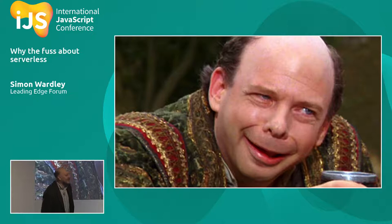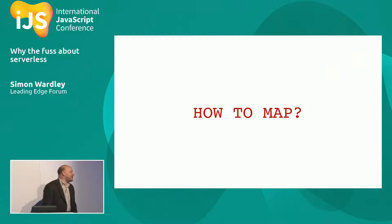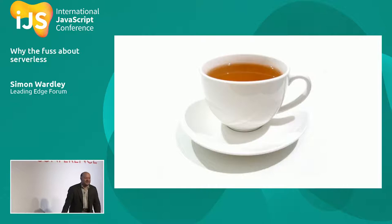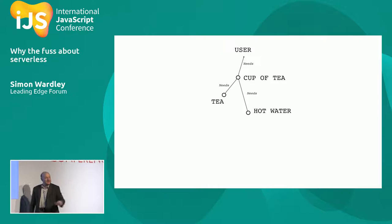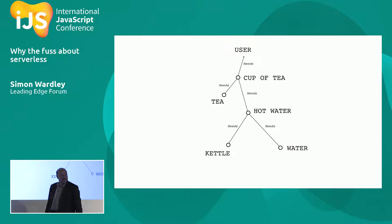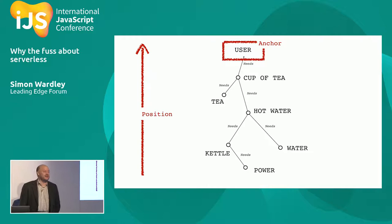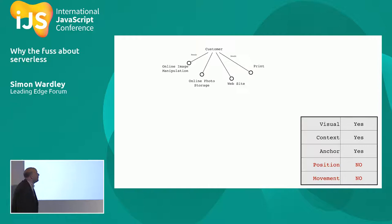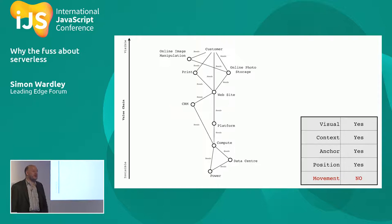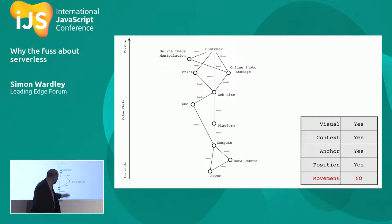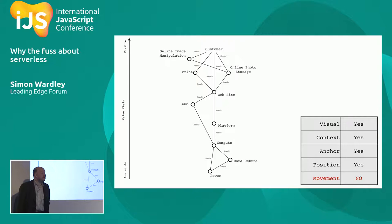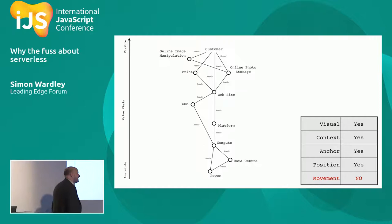How to map — that was my problem in 2005. Being British and totally confused, I sat down with a cup of tea. As a user, I need a cup of tea, and a cup of tea has needs: tea, hot water. Hot water needs a kettle and cold water. A kettle needs power. So I have an anchor — the user — and position in a chain of needs. I can take my systems diagram, put the user at the top, put the components underneath in a value chain: website requires platform requires compute, data center, and power. Now I have an anchor and position. But a map without movement is not a map.